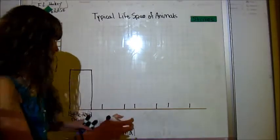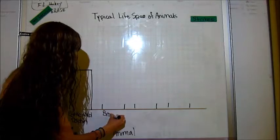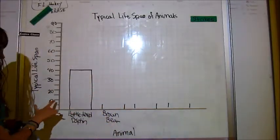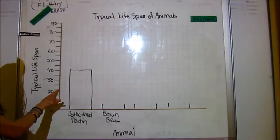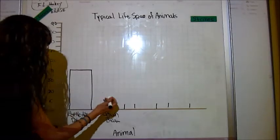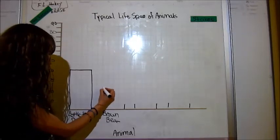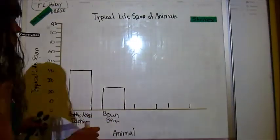So bottlenose dolphin is first and it is 40 years. So there this is. And then I write bottlenose dolphin. Then I've got a brown bear here and they typically live 22 years. So here's 20, there's 25. So I'm going to go slightly below halfway up this line because halfway would be 23.